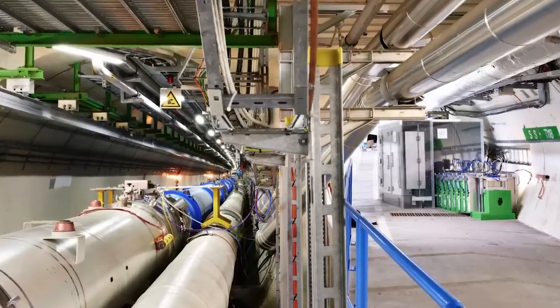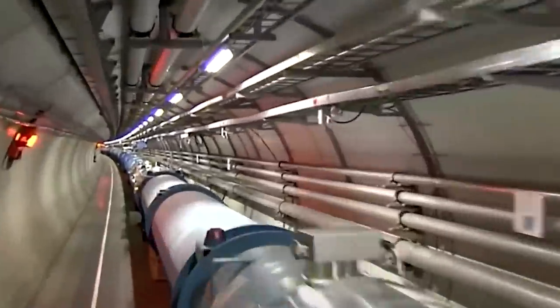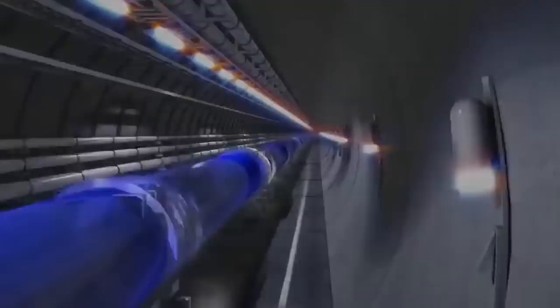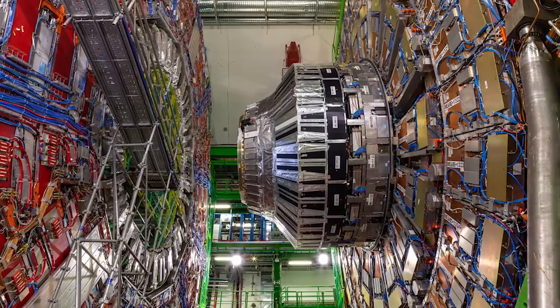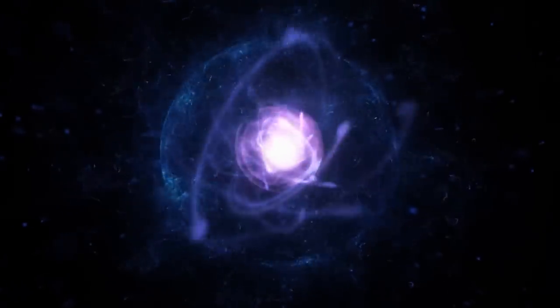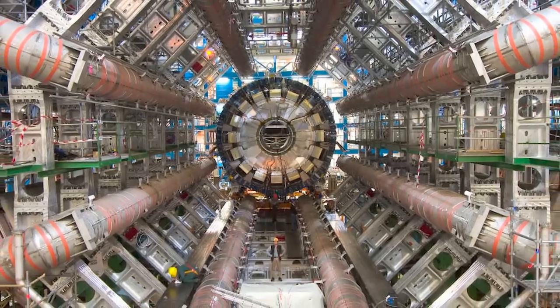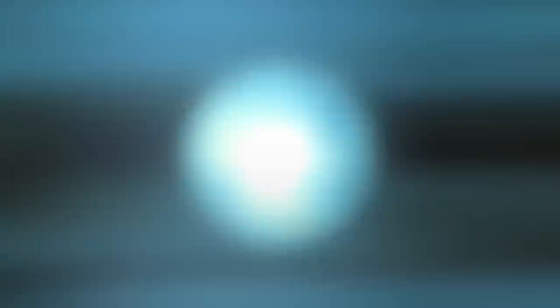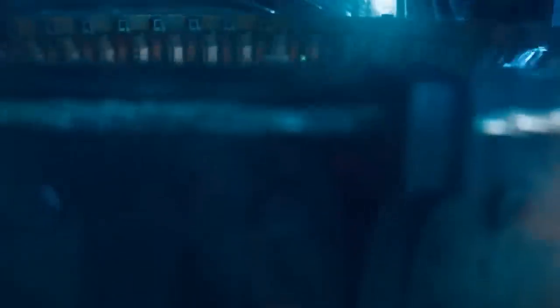Looking further ahead, the high-luminosity LHC project will employ cutting-edge technologies like more powerful superconducting magnets and enhanced detectors to achieve an extraordinary ten-fold increase in luminosity compared to the initial LHC. This luminosity-pushing phase is slated to begin operations in 2029. Additionally, investigations are underway regarding even more ambitious future circular colliders that could reach spectacular collision energies of 100 tera electron volts, nearly seven times greater than the current LHC. New technologies will be required to realize this vision in the coming decades.